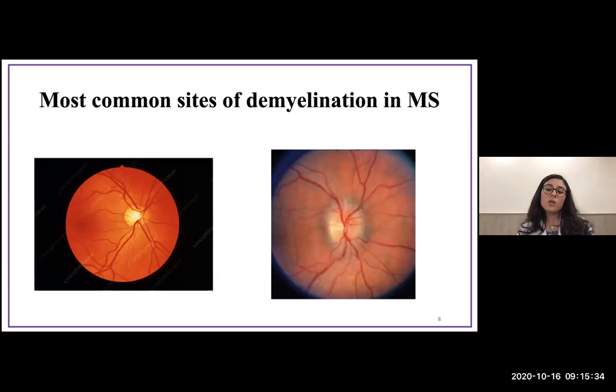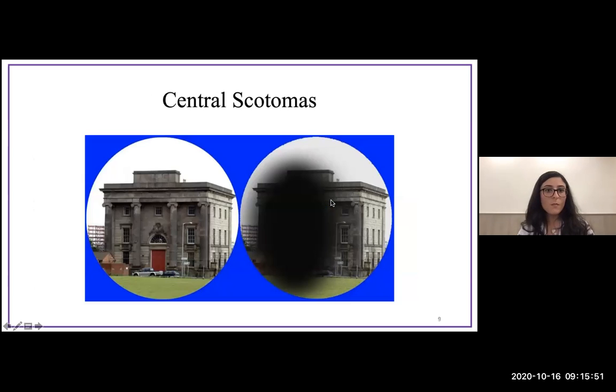The most common site of demyelination in multiple sclerosis is the optic nerve. If we perform a fundoscopy exam, this is what a normal optic nerve should look like, but with multiple sclerosis you get demyelination—this is what it actually looks like, this is the demyelinating portion. Characteristically, there are central scotomas seen in MS patients—a black dot in the middle of the patient's vision.